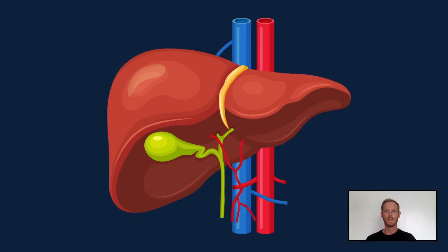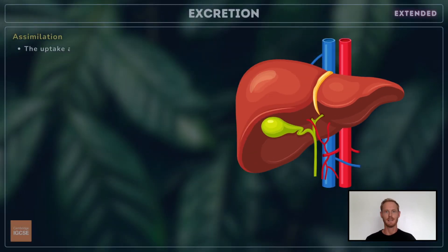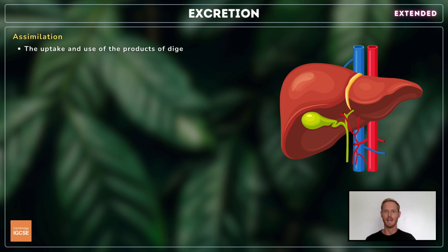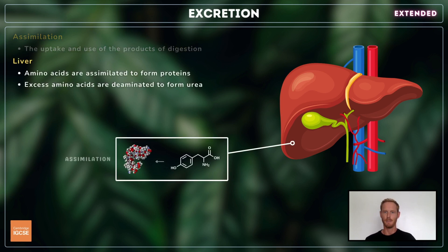Next, you need to know about the role of the liver. Assimilation is the uptake and use of nutrients by cells. The liver plays an important role in assimilation as it removes amino acids from the bloodstream and uses them to synthesize proteins.